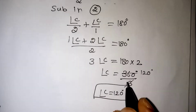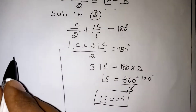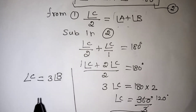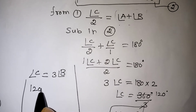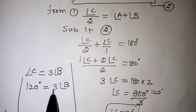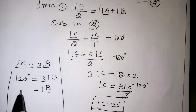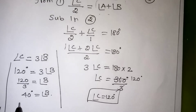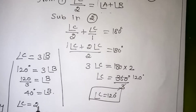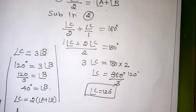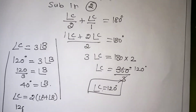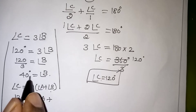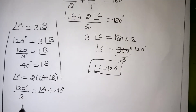Now with angle C we can find all remaining angles easily. From the question, angle C equals 3 times angle B. Substituting, 120 degrees equals 3 times angle B, so angle B equals 120 divided by 3, which is 40 degrees. Then, from angle C equals 2 times the quantity angle A plus angle B, we get 120 divided by 2 equals angle A plus angle B, which gives 60 equals angle A plus angle B.